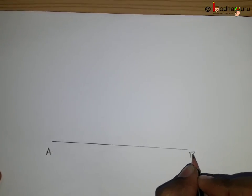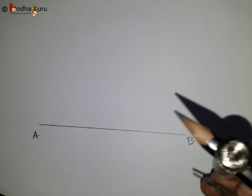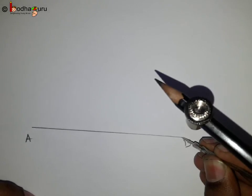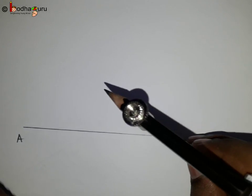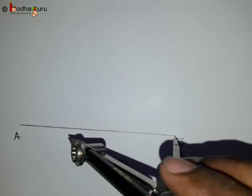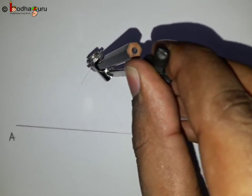Say, we are told to bisect the line segment AB. We put the needle of the compass on any end of the line segment AB and open the compass enough such that its radius is more than half of the line segment AB. With B as center, draw arcs below and above the line segment.